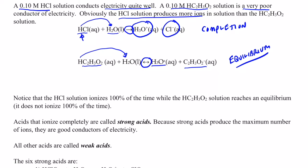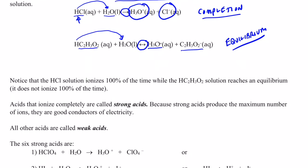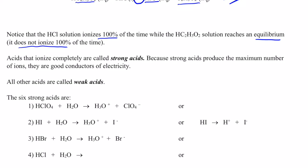Those that do ionize 100% of the time or have this completion process going on are strong acids. So notice that HCl ionizes 100% of the time, while acetic acid reaches an equilibrium. In other words, it does not ionize 100% of the time. Acids that ionize completely or 100% of the time, as I've said, are considered strong acids. Because they produce the maximum number of ions, they are great conductors of electricity. Acids that don't do this that are called weak acids.